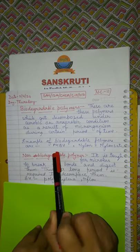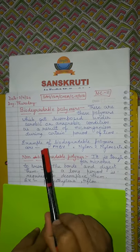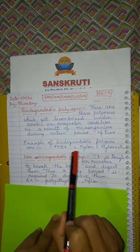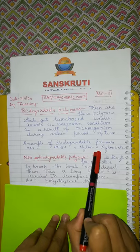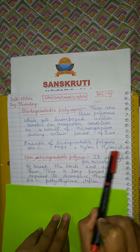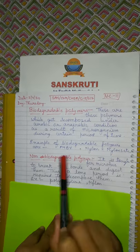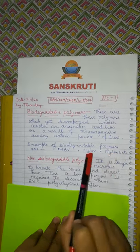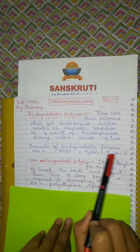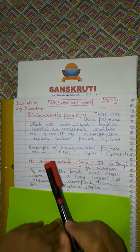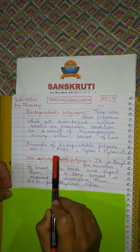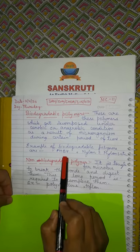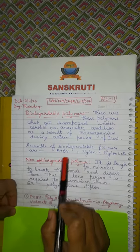Examples you have to focus on are PHBV and nylon 2-6. This is one polymer's name — nylon 2-6, also called nylon 2 nylon 6. PHBV is the short form of another polymer name.